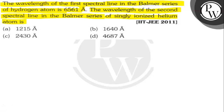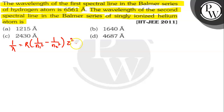Let's find out. The wavelength of the Balmer series can be calculated by the formula: 1 by lambda is equal to R into 1 by n1 squared minus 1 by n2 squared, into z squared. Where lambda is the wavelength of the line, R is the Rydberg constant, n1 is 2 for Balmer series, n2 is 3, 4, 5, and so on depending on the line, and z is the atomic number of the element.